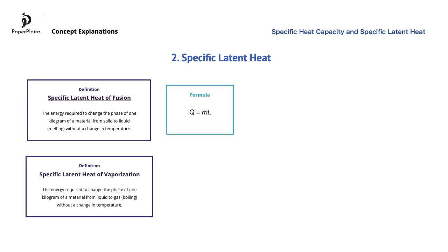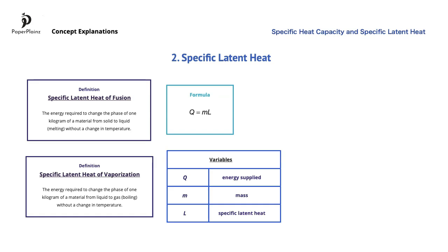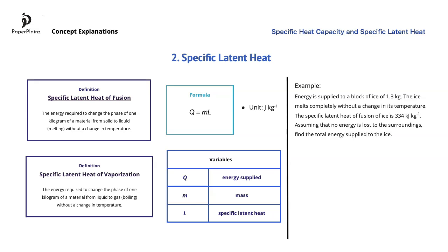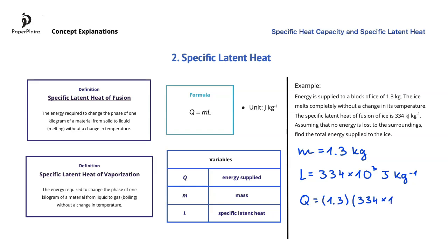Here is the formula for both, along with the variables. From this, it logically follows that the unit of specific latent heat is joules per kilogram. Let's discuss an example. We have to find the energy supplied to an ice block as it melts. The mass is 1.3 kilograms. The specific latent heat of fusion of ice is 334 kilojoules per kilogram, which I will write in joules as 334 times 10 to the power of 3 joules per kilogram. Substituting into the formula, we get Q equal to 1.3 times 334 times 10 to the power of 3. This gives us approximately 434,000 joules, which we can write as 434 kilojoules.